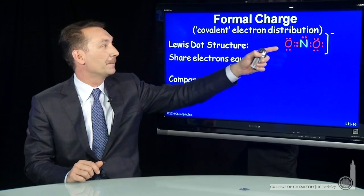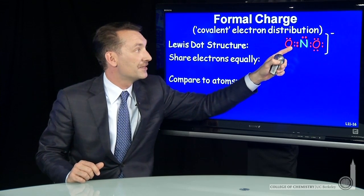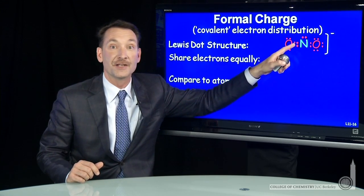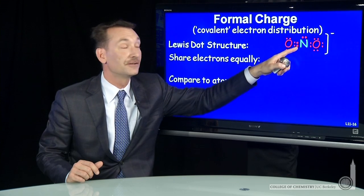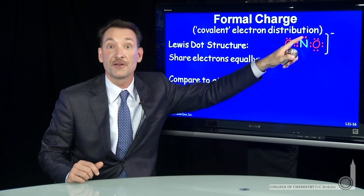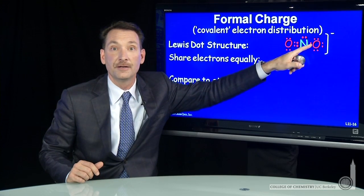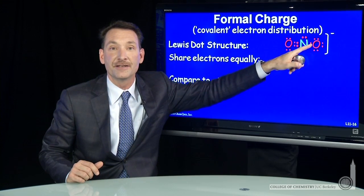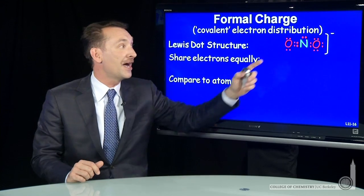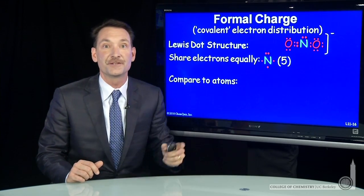So let's do that. Nitrogen, in this case, has one, two, three, four electrons in a bond, so it gets two electrons here. Two electrons from this lone pair — it doesn't have to share those with anyone — and one more in this bond shared with the oxygen. So a total of five electrons around nitrogen in this molecule.